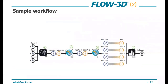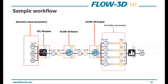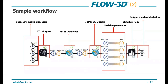Here's a quick sample workflow. Starting on the left with input geometry parameters, we use a node called the STL morpher to change the geometry. That modified STL image goes to the Flow3D solver, which performs the calculation and outputs the necessary variables. These variables are then converted into the statistics node, which outputs a standard deviation. Based on the type of study, this can either loop as an automation with different geometric parameters, or as an optimization, the engine calculates the next input parameters closer to your target goal.